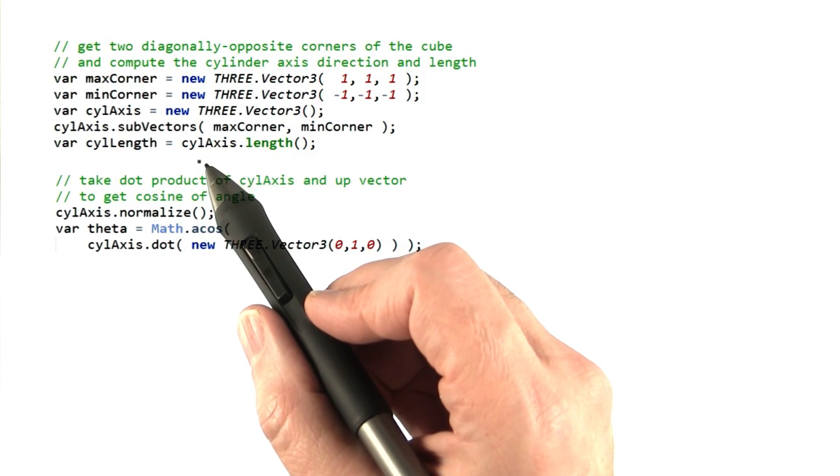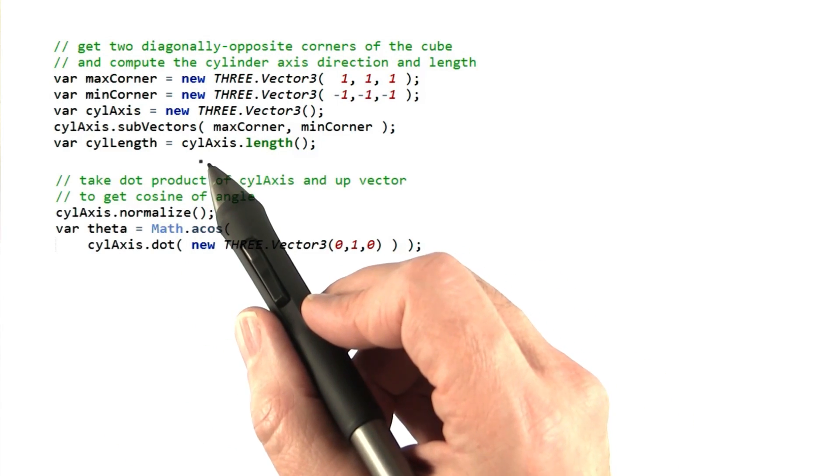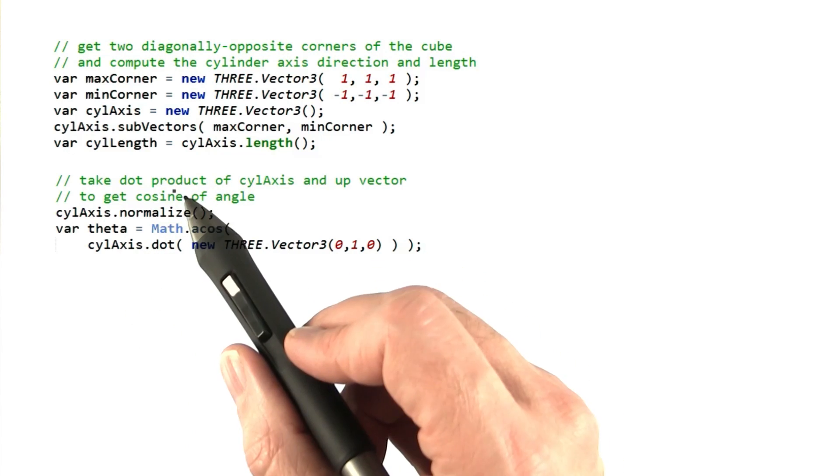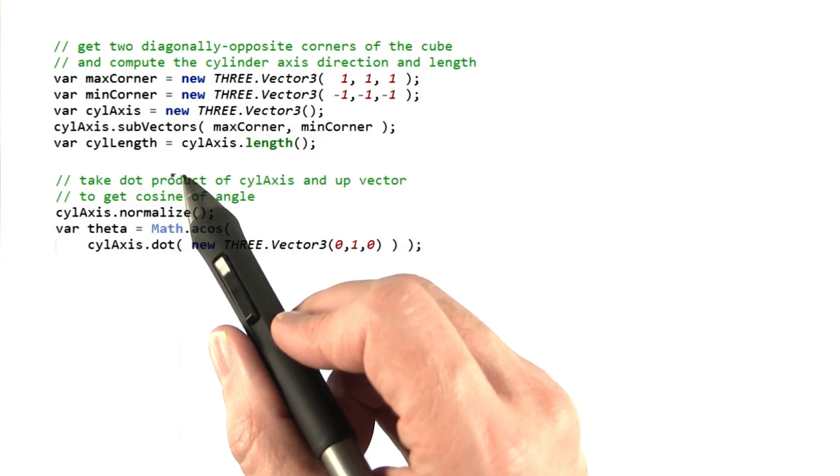At this point, we have the axis of rotation, the length of the cylinder, but we don't have the angle of rotation yet. However, we have everything we need to get it.